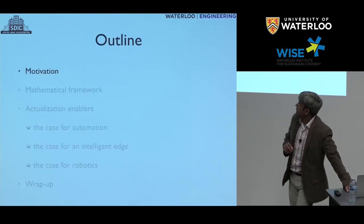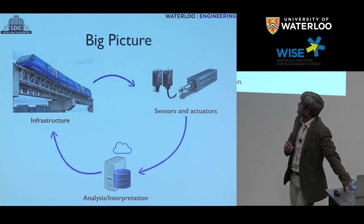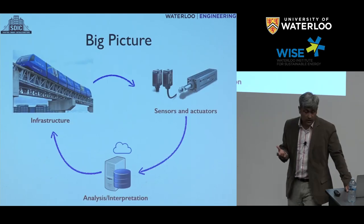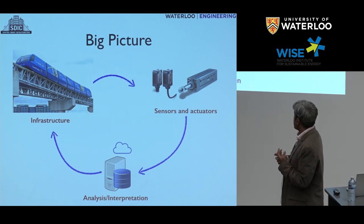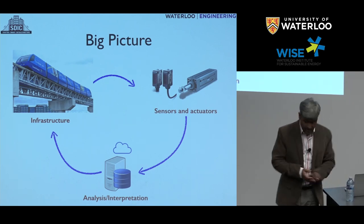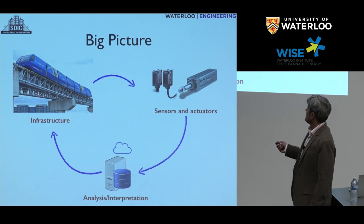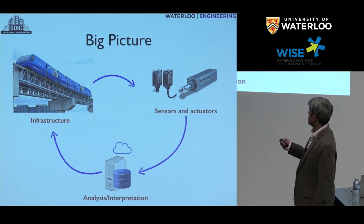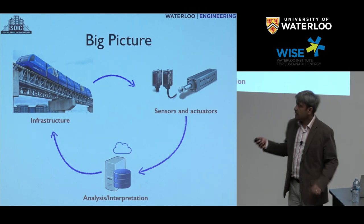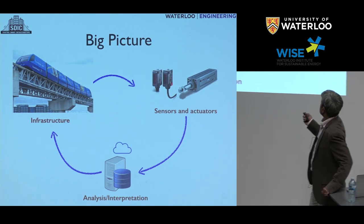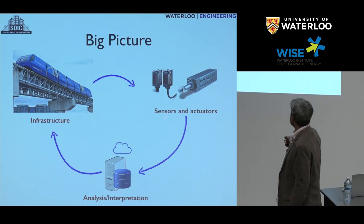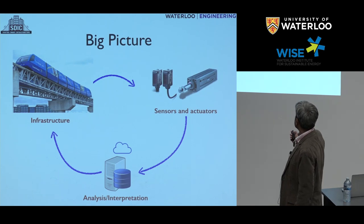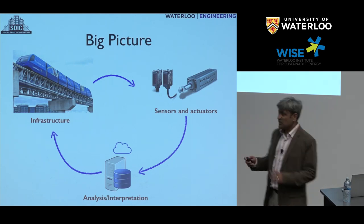Let's talk first about the motivation for this work. What is smart infrastructure? What do we mean by smart infrastructure? Essentially what we have is a piece of infrastructure that may or may not be smart. When I say smart, I mean it has embedded capabilities to sense its state, or the ability to actuate or change its state. Whether it's got the ability to sense or actuate makes it smart.